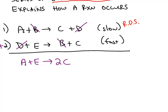Next, we were asked for the predicted rate law. The predicted rate law is always based on the rate-determining step. So, in this case, the slowest step is step number one.